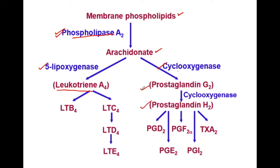This cyclooxygenase enzyme exists in two isoenzyme forms: COX-1 and COX-2. NSAIDs work by inhibiting the action of the cyclooxygenase enzyme.